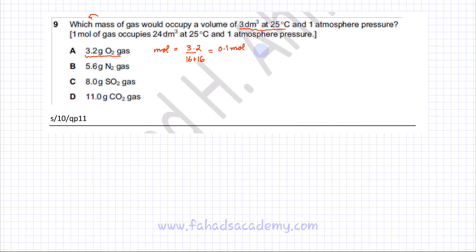The next thing is we have the moles of gas, we can find the volume. So the volume of gas would be the moles of gas, 0.1, multiplied by the molar volume which is 24 in this case. So this equals 2.4 decimeter cubed, which is not the correct answer because we're looking for 3 dm³.